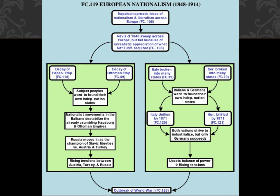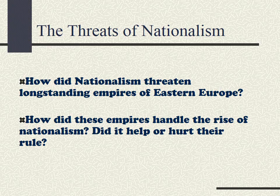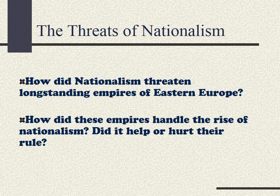This flowchart recaps what we just talked about: Italian and German unification on one side, Eastern European troubles on the other, all culminating in the outbreak of World War I. To recap the guiding questions: How did nationalism threaten the long-standing empires of Eastern Europe, and how did these empires handle the rise of nationalism? Make sure to be able to answer these questions, and use this to fill in the chart attached to iTunes U. See you later.